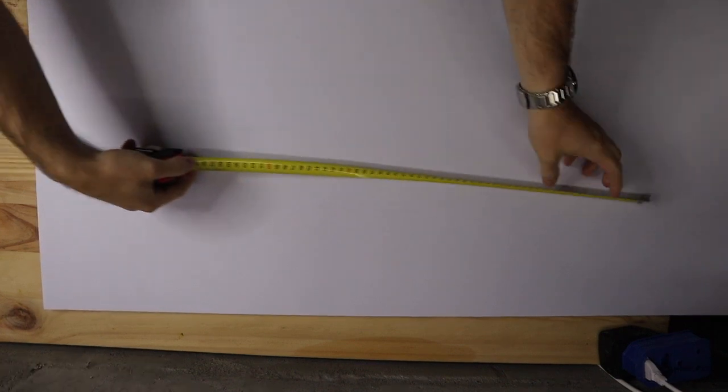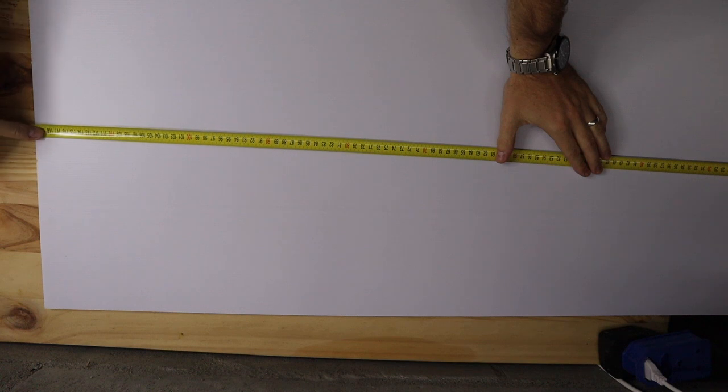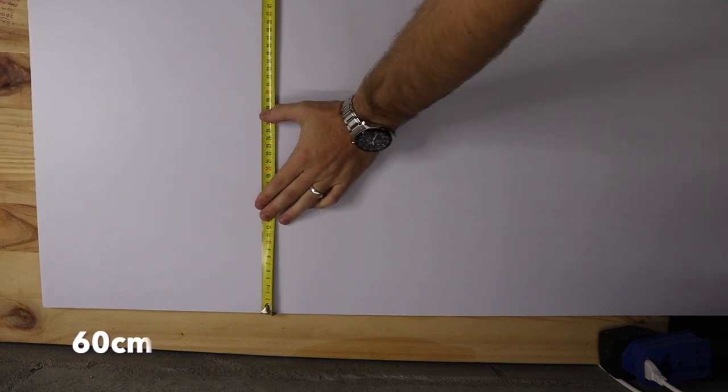The sheet is about 120 centimeters long, and it is about 60 centimeters wide.